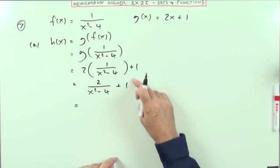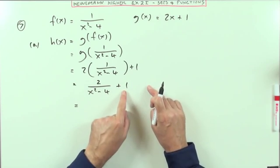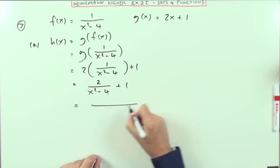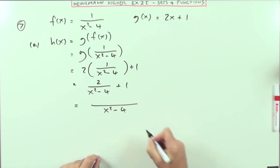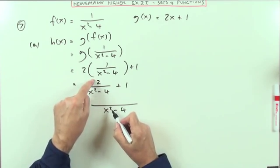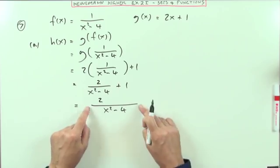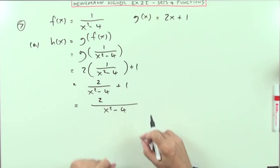means changing 1 into an equivalent fraction with that same denominator. So you want them both to have x squared minus 4. The first one says 2 over x squared minus 4. Just put them in a single line because they're going to share the same denominator.